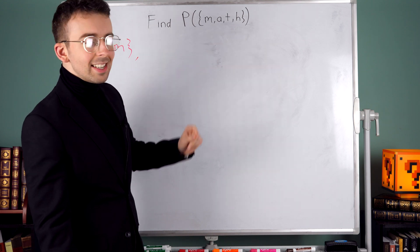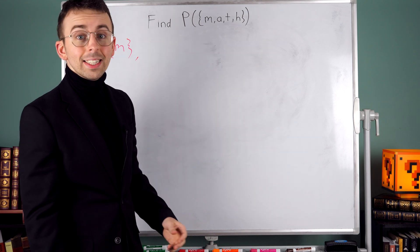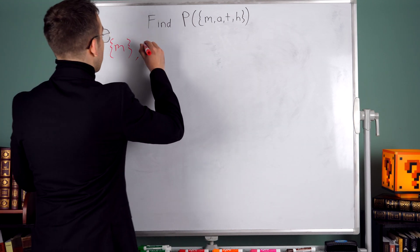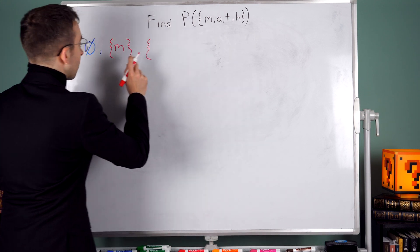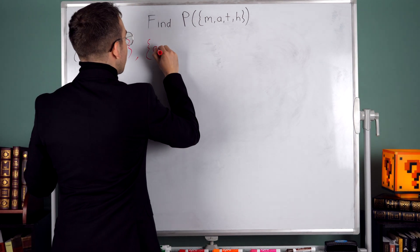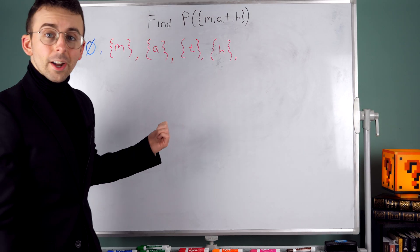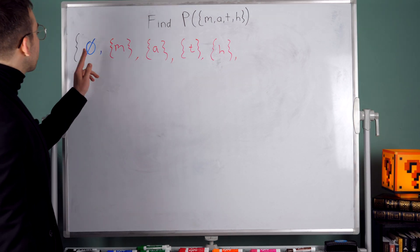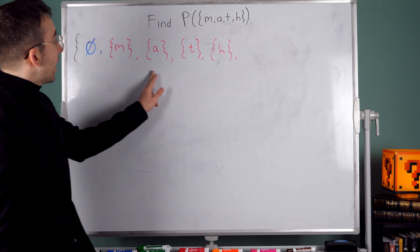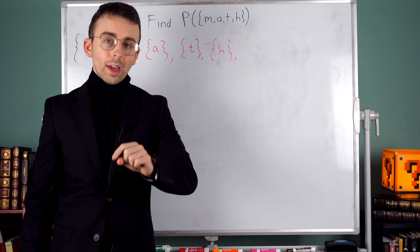Well, those subsets could include the element m like this one here, or they could include the element a, or they could include the element t, or the element h. There are four total possibilities. The subset including m, the subset including a, and so on. I'll skip to when I'm done. There we go. We've taken care of all of our subsets with zero elements and all of our subsets that have one element.